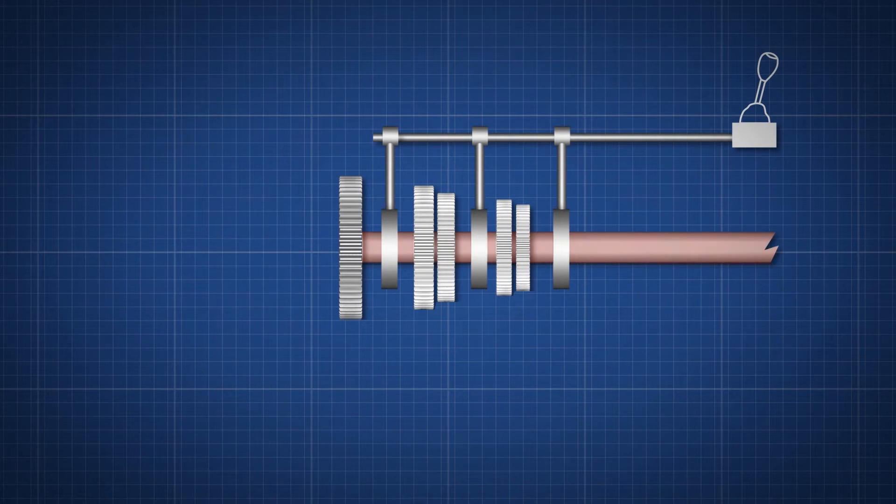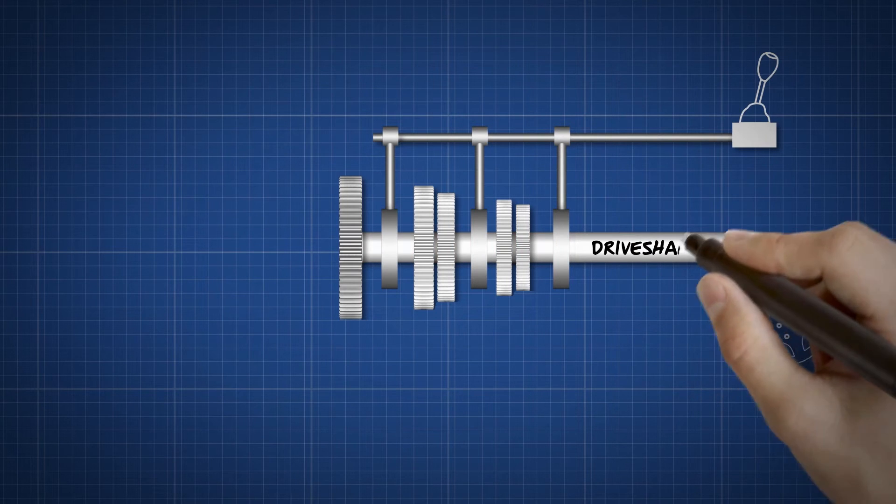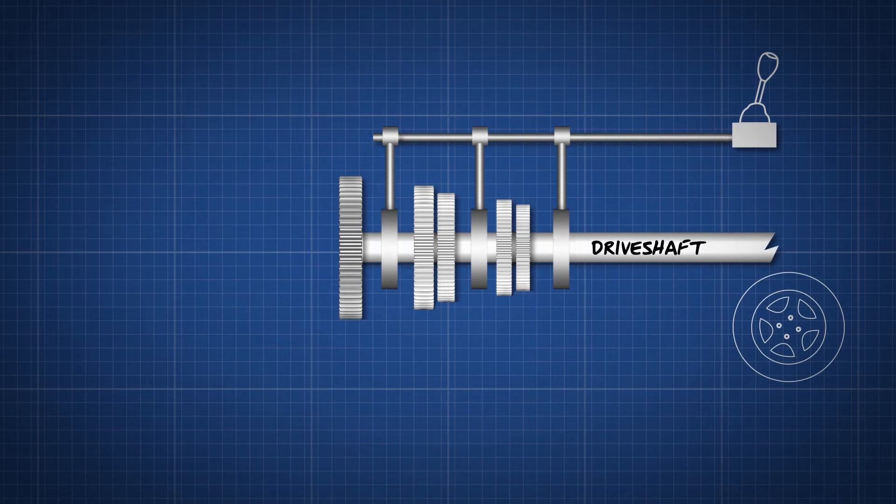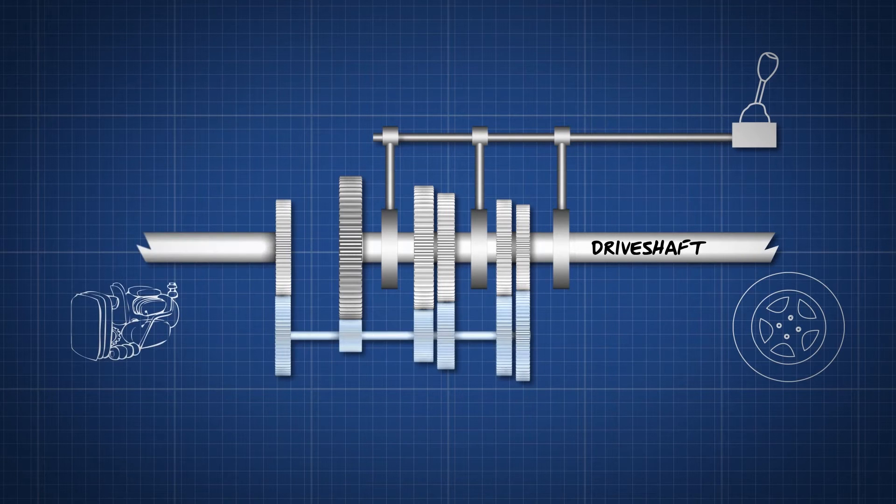These gears are on a shaft that is connected to the wheels - it's called the drive shaft. To make a car move, you have to connect the clutch from the engine to the drive shaft.